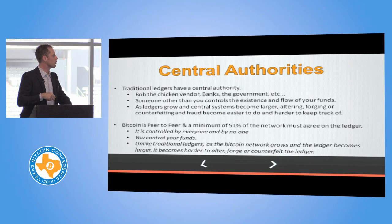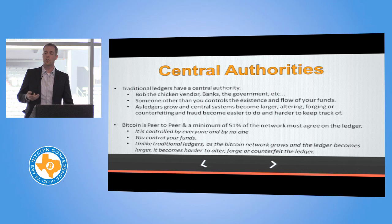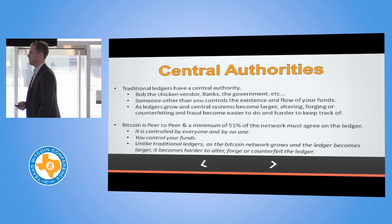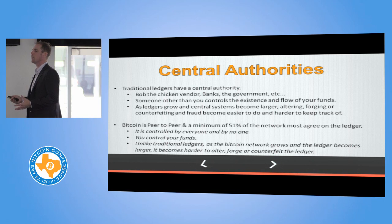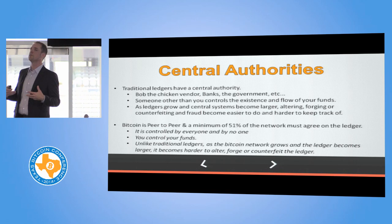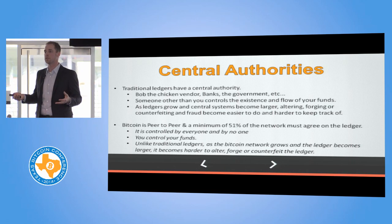So you're not in control of your money. As these central ledgers grow and become bigger, they become easier to alter, easier to forge, easier to counterfeit, and easier to commit fraud against — because as they grow they become more complex and nobody can keep track of these giant ledgers. So you can remove sub-penny amounts or even larger amounts off of these ledgers and nobody ever notices. That's a problem because you lose your money, the banks lose their money, everybody loses money except the people stealing it. This is inherent in the current ledger system.